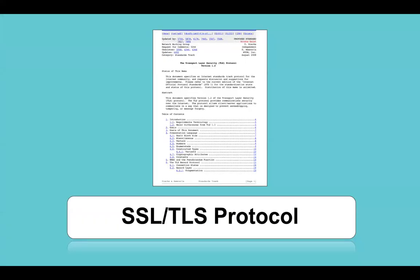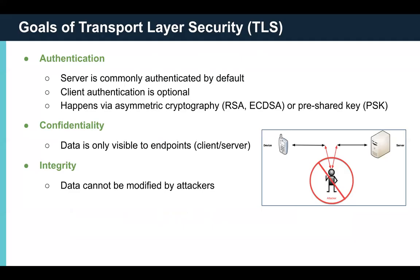Now let's move on to a quick overview of SSL and TLS for those not as familiar with it. TLS has three main goals: authentication, confidentiality, and integrity. Authentication means authenticating the client and/or the server — the server is commonly authenticated by default, while client authentication is optional. This is done using asymmetric crypto with RSA or ECC, and/or a pre-shared key setup, acronymed as PSK. Confidentiality guarantees data is only visible to the endpoints. Integrity means data can't be modified by an attacker in transit.